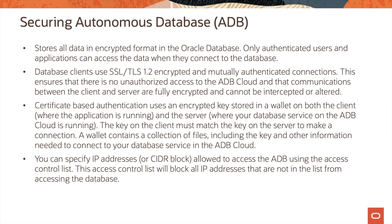Let us now look at securing Oracle Autonomous Database. The autonomous database stores all data in encrypted format. Only authenticated users and applications can access the data when they connect to the database. Database clients use SSL/TLS 1.2 encrypted and mutually authenticated connections. This ensures there is no unauthorized access to the autonomous database cloud, and that communications between the client and server are fully encrypted and cannot be intercepted or altered.